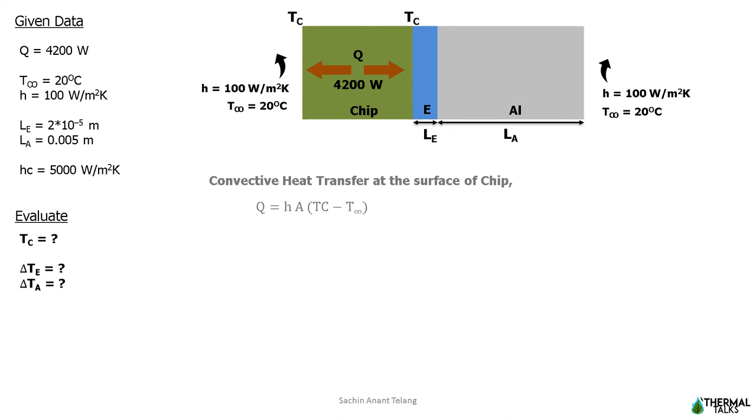So these are the given data. We shall begin with convective heat transfer from the surface of the chip, that is Q equals HA times Tc minus T infinity, where Tc is chip surface temperature. Since the dimensions of chip are not given I assume surface area to be 1 meter square. So Q is 4200, H is 100, T infinity the ambient air temperature is 20 degrees. So we will get the value of Tc, the chip surface temperature, as 62 degrees Celsius.